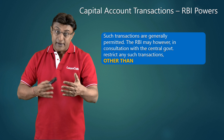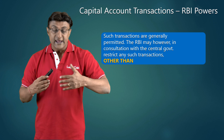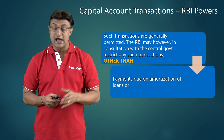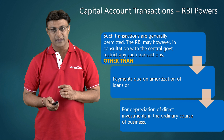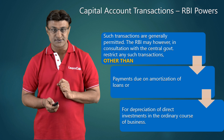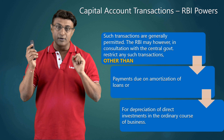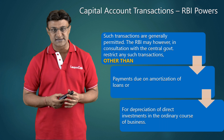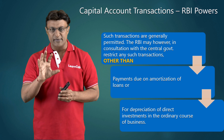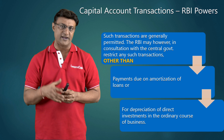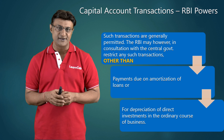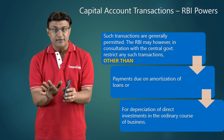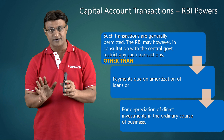So any transaction that alters assets and liabilities of a person resident in India — whether in India or outside India — or any transaction that alters assets and liabilities of a person resident outside India in India, is a capital account transaction. We don't need to worry about the extremes because that is not the subject matter under FEMA. Our focus streamlines to assets and liabilities of a person resident in India outside India, and assets and liabilities of a person resident outside India in India.